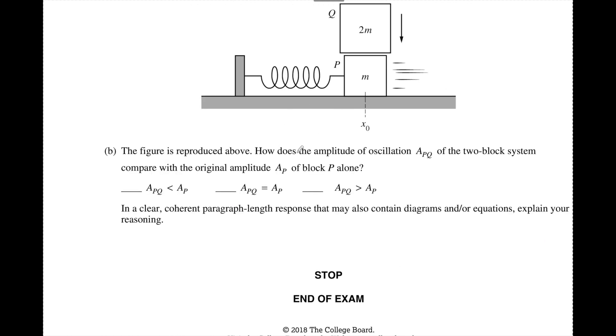The figure is reproduced above. That's great. How does the amplitude now? So now they don't want to talk about period. Now we want to know the amplitude of the two boxes and compare with the original amplitude initially A p of just p alone in a clear coherent paragraph length. So this is a paragraph length. We can use diagrams, equations, and explain our reasoning.